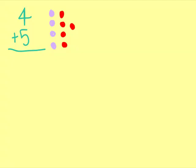Now, let's count the total number of dots. 1, 2, 3, 4, 5, 6, 7, 8, 9. 4 plus 5 is 9.